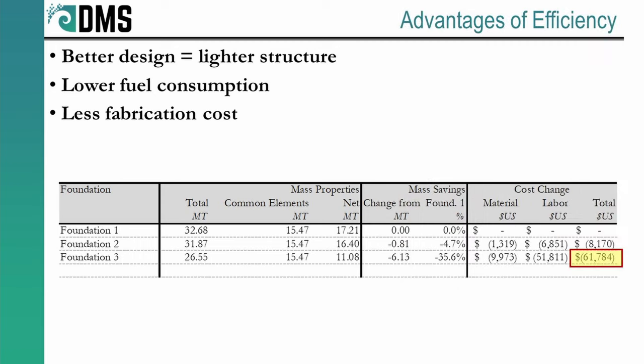Now I know efficiency doesn't seem that important until you consider the cost implications. Sure, lighter structures require less fuel, but they also mean large savings for the shipyard. Take a look at the table on your screen. This shows the estimated costs for three different foundation designs. When we account for the cost of fabrication, cost savings quickly add up. That last foundation was estimated at $61,000 less. Think of what you could do with that extra cash.